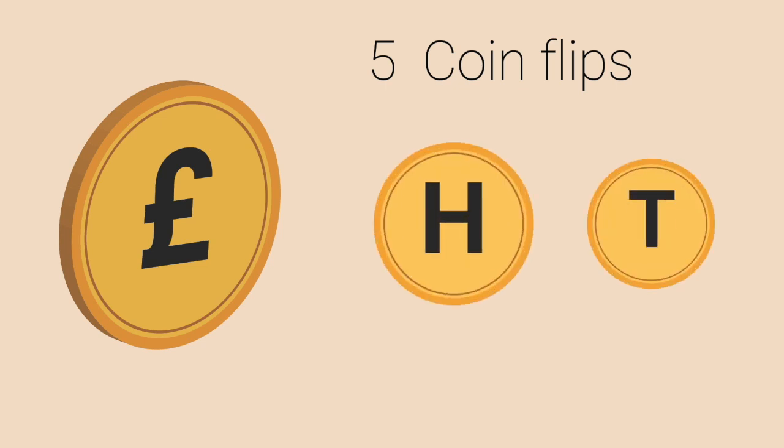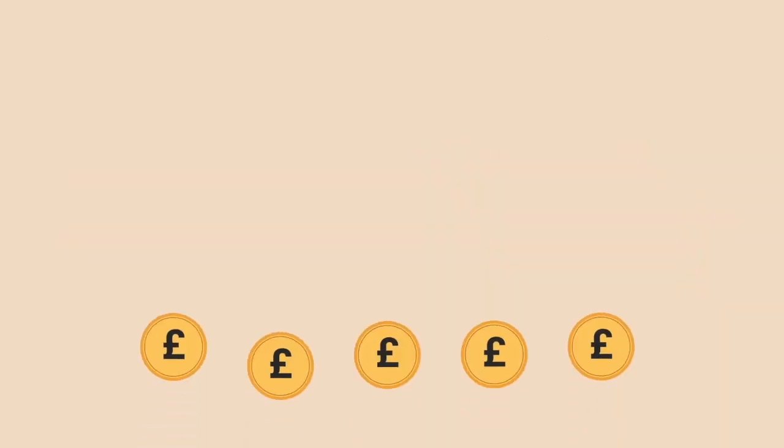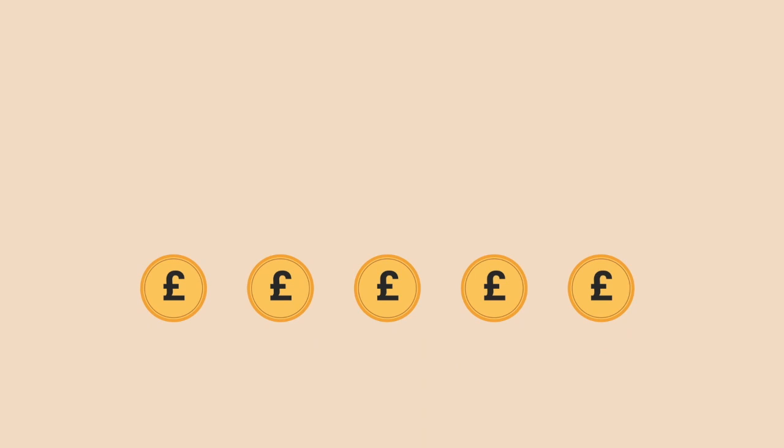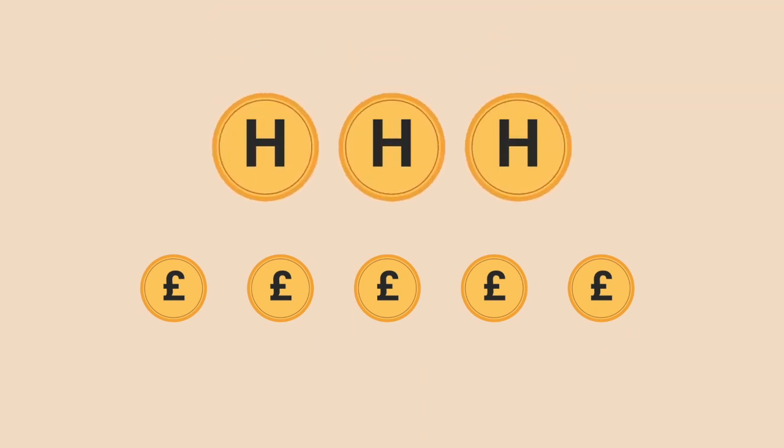Before we try to explain the maths behind the summer of the shark, let us try to understand a much simpler problem that involves tossing or flipping a coin five times. The result, as you expect, is either a head or a tail. However, we are interested in knowing what are the chances of getting exactly three heads if we flip a coin five times.